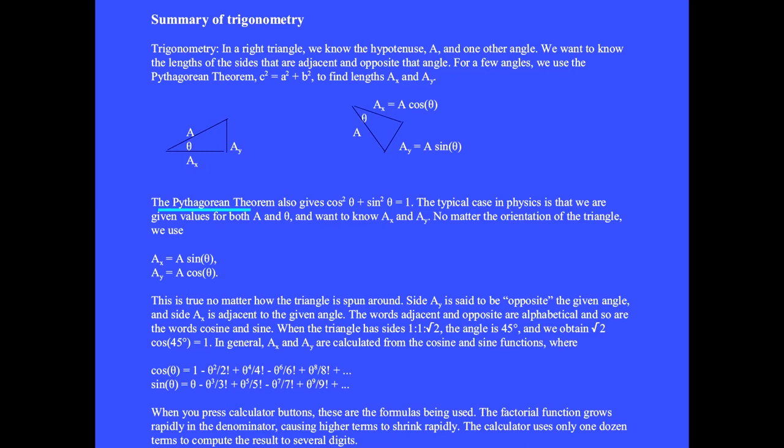The Pythagorean theorem also gives cos²θ + sin²θ = 1. The typical case in physics is that we're given values for both a and theta and we want to calculate a_x and a_y.